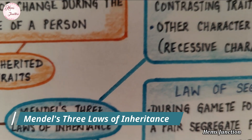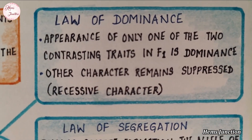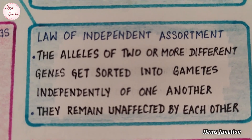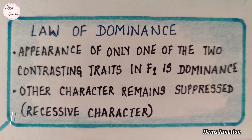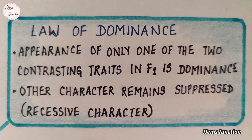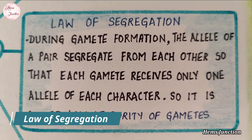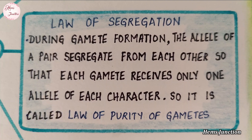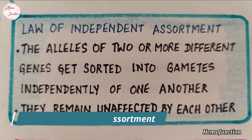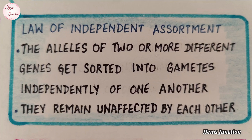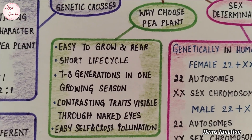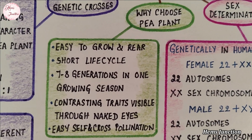These are the three laws of inheritance proposed by Mendel: Law of Dominance, Law of Segregation, and Law of Independent Assortment.